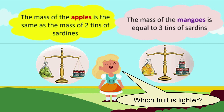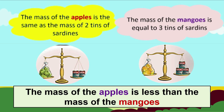Look at this scale. The mass of the mangoes is equal to 3 tins of sardines. The mass of the apples is the same as the mass of 2 tins of sardines. Which fruit is lighter? Yes, of course — the apples are lighter because they are balanced by 2 tins of sardines. So the mass of the apples is less than the mass of the mangoes.